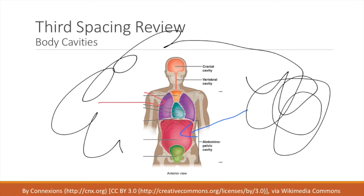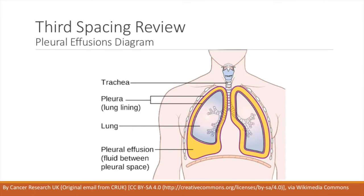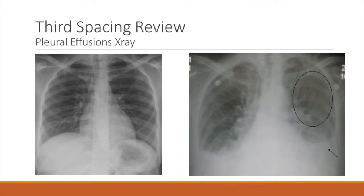The whole reason we got into this is because I want to discuss Light's criteria. Light's criteria is used for pleural effusions. A pleural effusion is going to be a gross collection of fluid in the pleura — not to be mistaken with edema, which is soaked into the tissue like a sponge. This is an actual collection of fluid. It's important to be able to recognize it on an X-ray, because you're going to see it a lot. Many times in clinical practice you might just see a pleural effusion on an X-ray — you're not even expecting it.